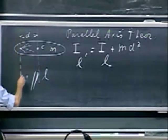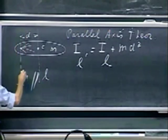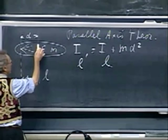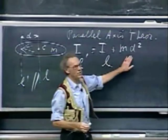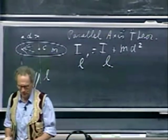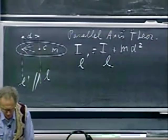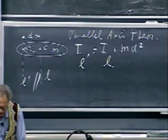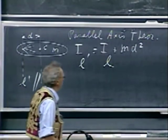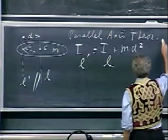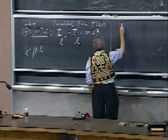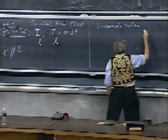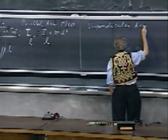Notice that the moment of inertia for rotation about an axis not through the center of mass is always larger than the one through the center—you always add the Md² term. There is a second theorem which sometimes comes in handy and that only works for very thin objects: the perpendicular axis theorem.